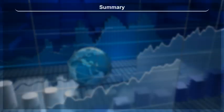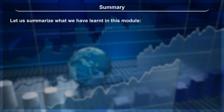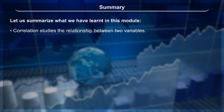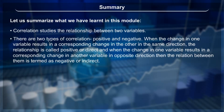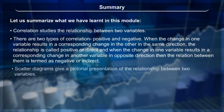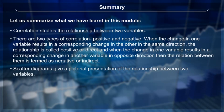Summary: Correlation studies the relationship between two variables. There are two types of correlation — positive and negative. When the change in one variable results in a corresponding change in the other in the same direction, the relationship is called positive or direct. When the change occurs in opposite directions, the relation is termed negative or indirect. Scatter diagrams give a pictorial presentation of the relationship between two variables.